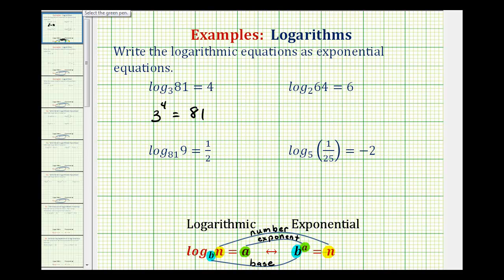One more way to do this is to start with the base, which in this case would be three, and work our way around the equal sign to form our exponential equation. Notice, three to the fourth is equal to 81.